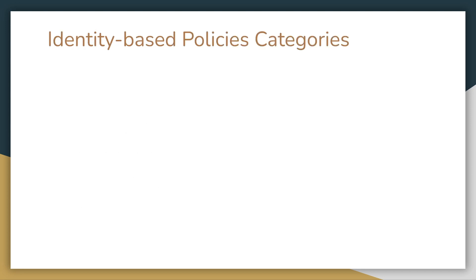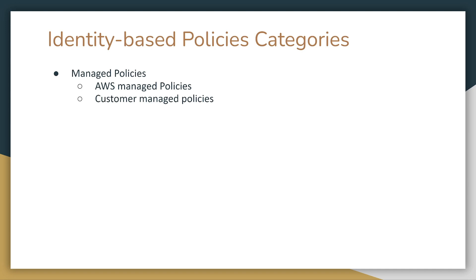Identity-based policy will be by far the most used type. There are managed policies, which are standalone identity-based policies that you can attach to multiple users, groups, and roles in your AWS account. There are two types of managed policies: AWS managed policies, which are created and managed by AWS, and customer managed policies, which are managed policies that you create and manage in your own AWS account. Customer managed policies provide more precise control over AWS managed policies.